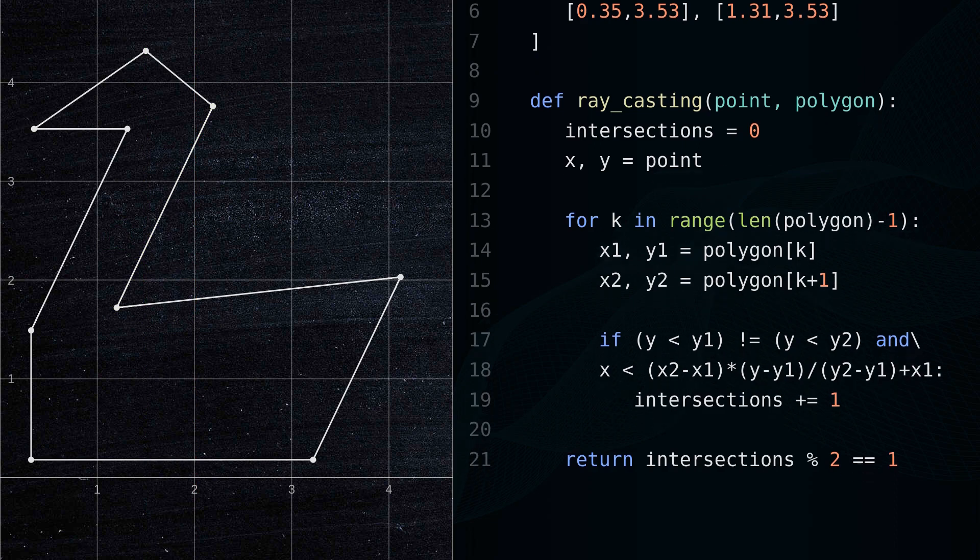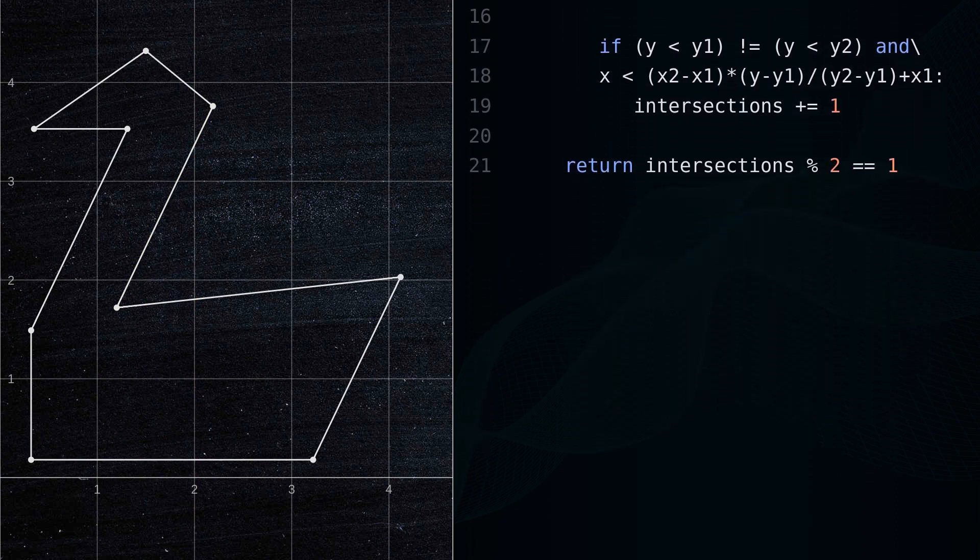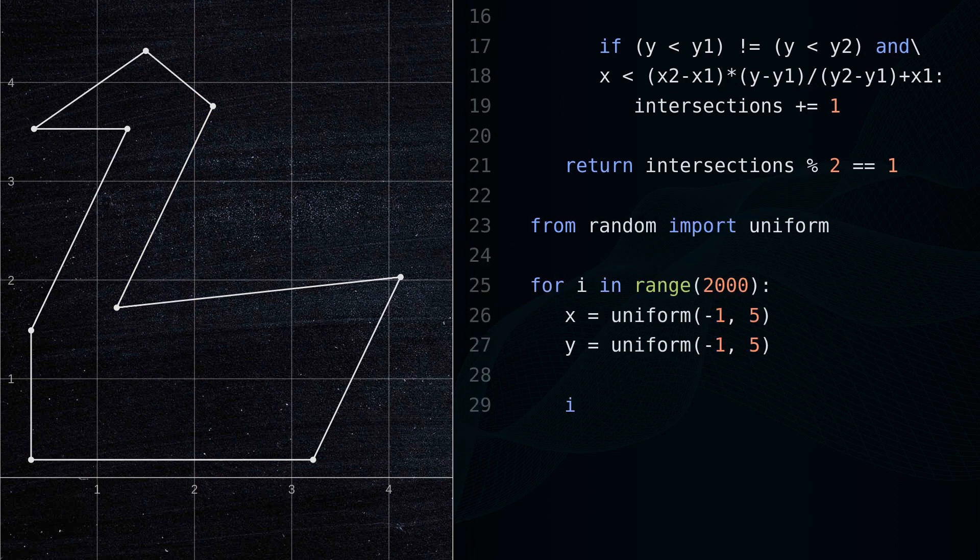The ray casting algorithm works with both convex and concave polygons. Let's draw some random points and paint the ones outside the polygon red, and the ones inside green.